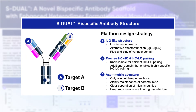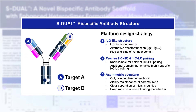Furthermore, as you can see here in figure B, the CH3 domain with knob-into-hole is inserted between the CH1-CL domain and VH-VL domain, enabling precise heavy-chain and light-chain pairing. Lastly, and perhaps most notably, S-DUAL exhibits an asymmetric structure. This unique structural characteristic allows for bi-specific antibody production from a single cell line, and simplifies in-process control by facilitating differentiation of impurities such as homodimers based on size during the manufacturing process.